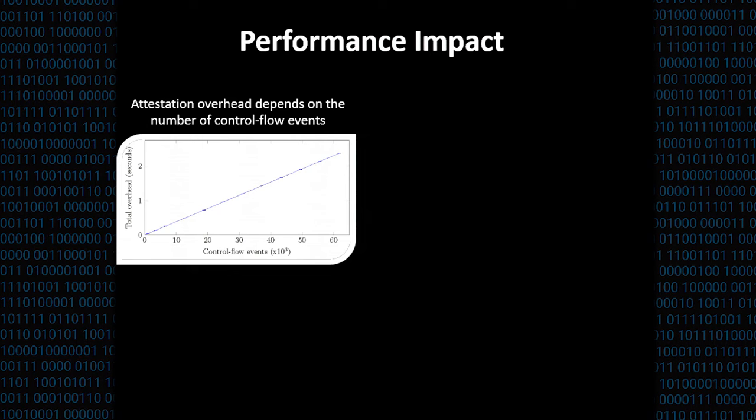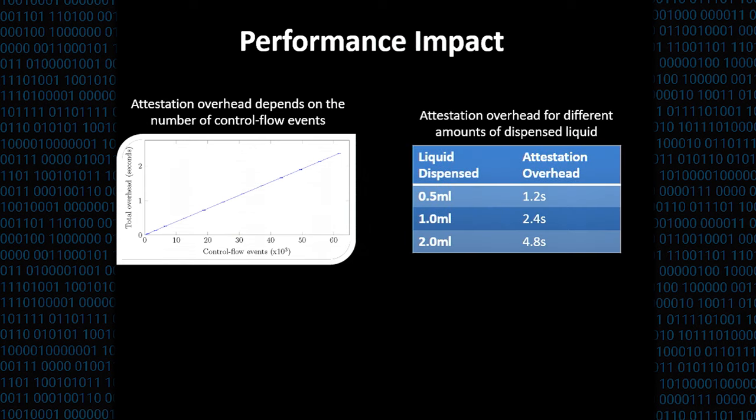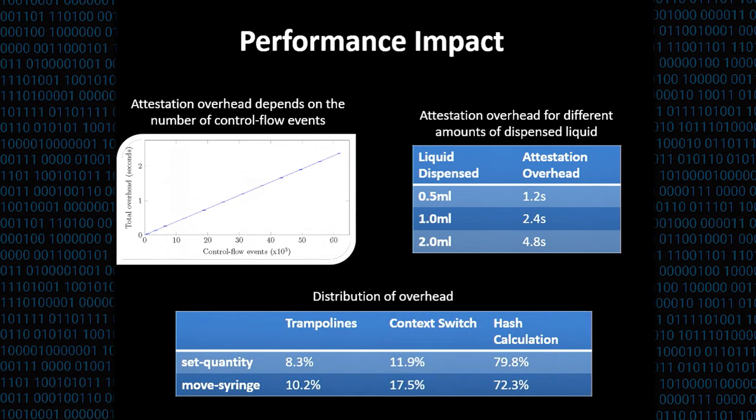The performance impact of C-FLAT heavily depends on the number of control flow transitions that are attested. To break this down into real numbers, consider liquid dispenses per hour that are usually in the range of 0.5 milliliters to 2.0 milliliters. And as you can see, there's only a couple of seconds. The distribution of the overhead also is different depending on the individual step. So we have approximately 10% for the trampolines. We have, of course, more overhead for the context switch because we need to switch to the secure world. And finally, the hash calculation takes most of the time and definitely here's also some room for optimization.